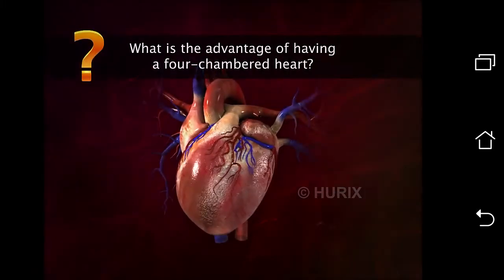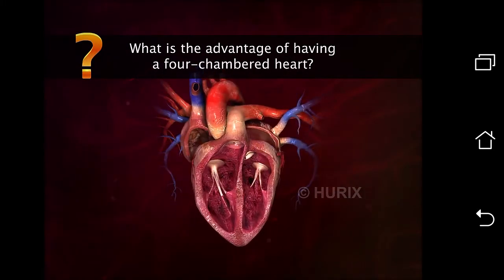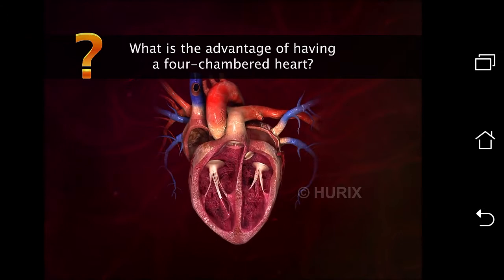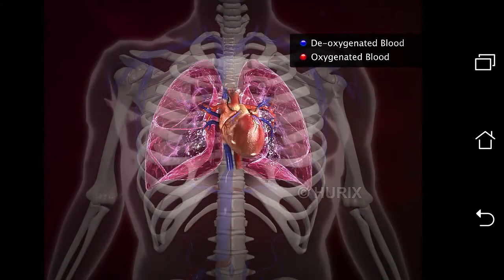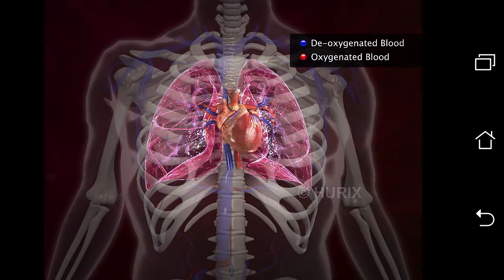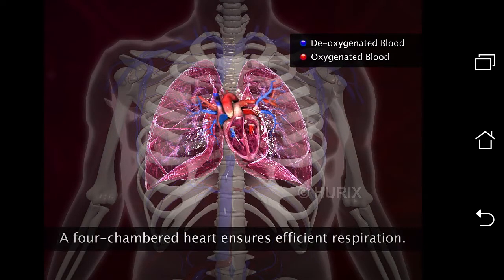What is the advantage of having a four-chambered heart? In a four-chambered heart, the oxygenated blood and the deoxygenated blood are completely separated. This ensures efficient respiration as more oxygen is able to reach the body tissue.